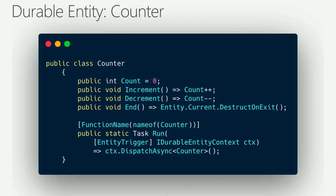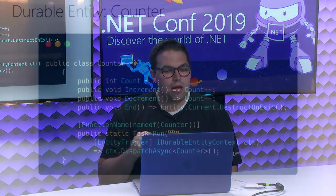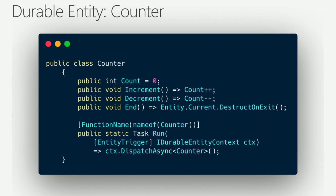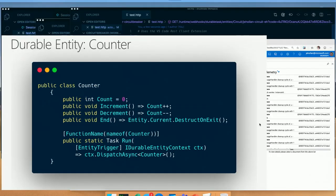Here's an example of a durable entity — this is the entire function app right here. It just looks like a class because that's kind of what it is — a counter class. The class has a count property set to zero initially. I can increment the count, decrement the count, and terminate an instance. Maybe I have Jeff's counter, Chris's counter, Seth's counter. The only thing that might look familiar to functions developers is the line at the bottom: a function called counter that maps to a durable entity of class counter. That's the only code I need to write for this function app.